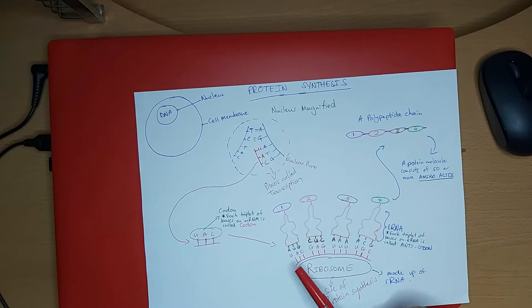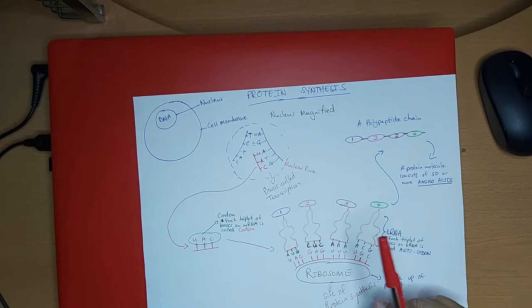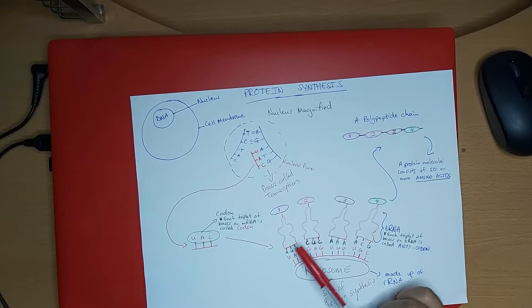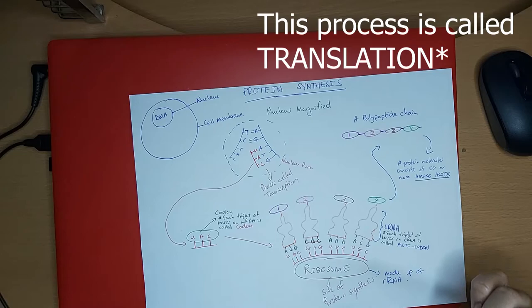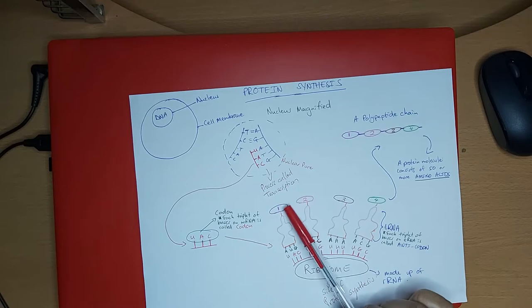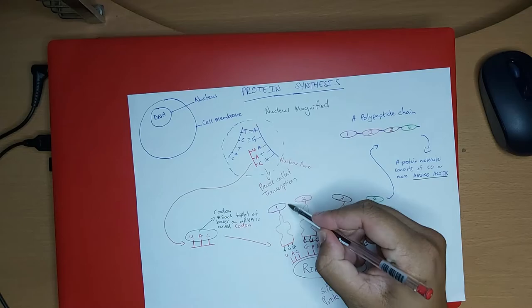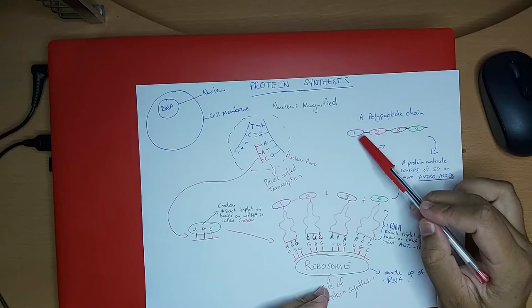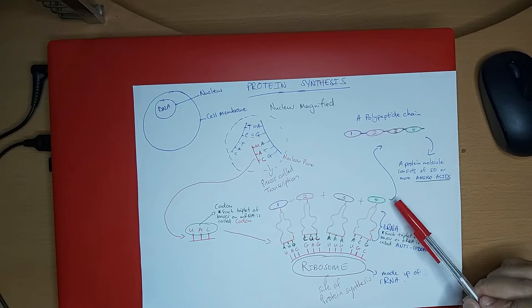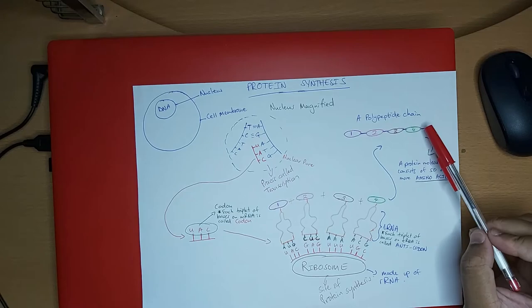The anticodon is complementary to the codon — A joins to U, U joins to A, G joins to C. They have a specific position, so the mRNA specifies the position in which the tRNA will come and join, producing a specific type of protein. Once they attach to each other, the amino acids form peptide bonds and start to join, forming a peptide chain.